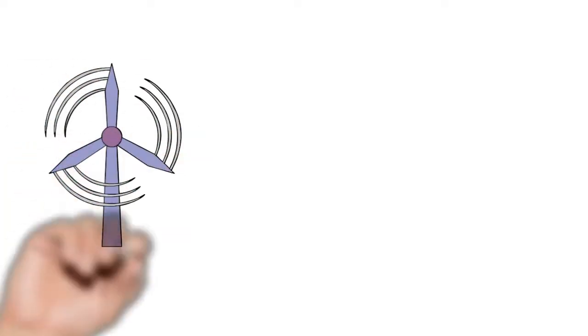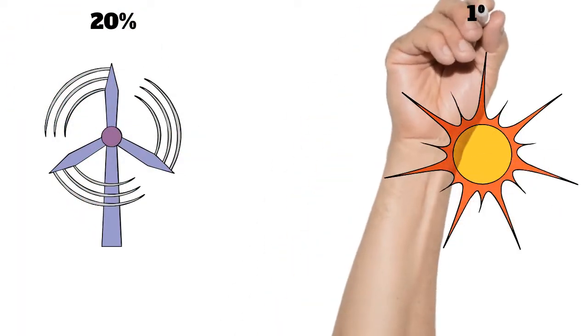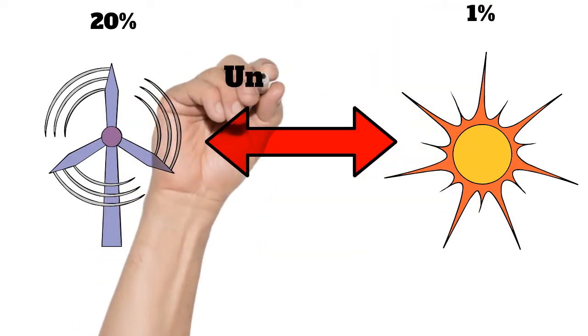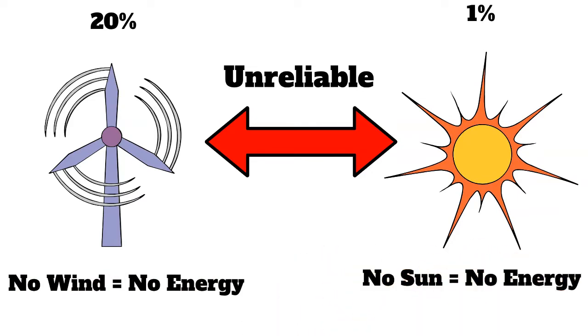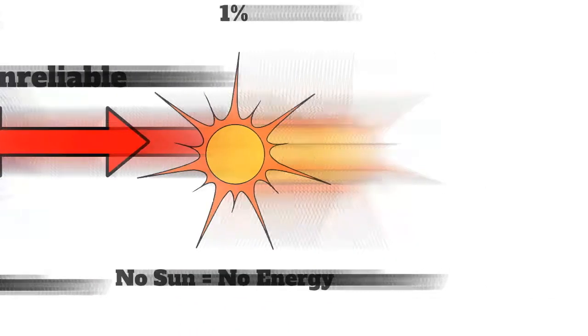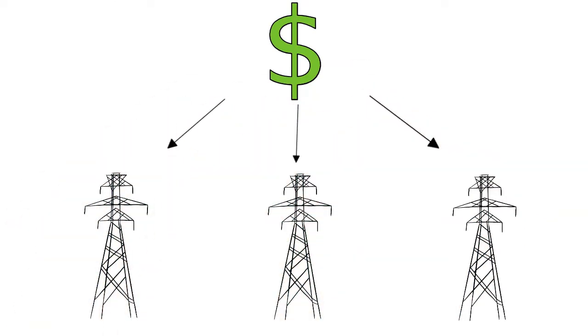However, Texas also gets a large degree of energy from wind at 20.3% and solar energy. Both of these energy sources, however, are unreliable. In favorable conditions, these power sources can produce a lot of power. But if the wind doesn't blow, or the sun doesn't shine, the power simply isn't produced. This imposes costs on the electrical grid in terms of both operation and reliability.